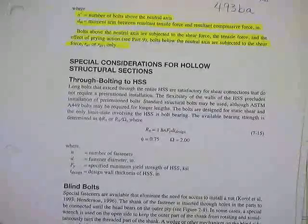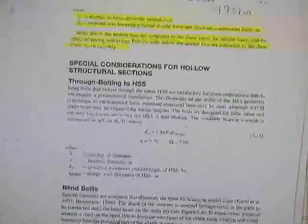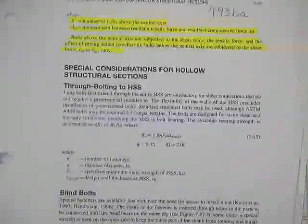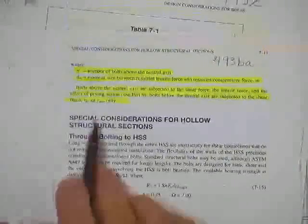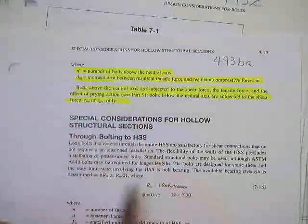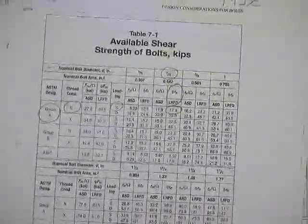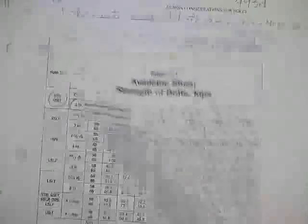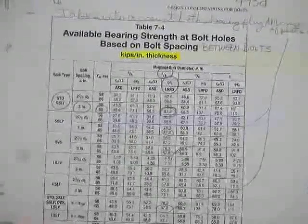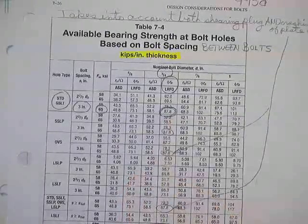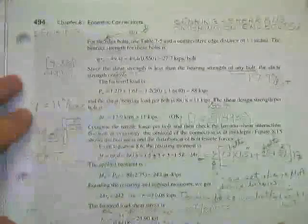More than likely you would use the tables, because the tables have all those bolts and information on how strong they are. There's the table we use to get the strength of the bolts. There's the table we use to get the strength of the plate in bearing because of the bolts. Here's where he completes out this problem so you can see all the numbers.